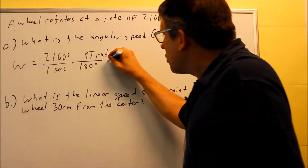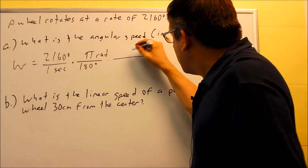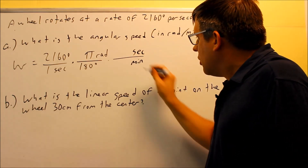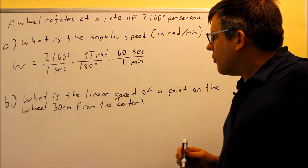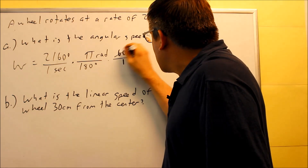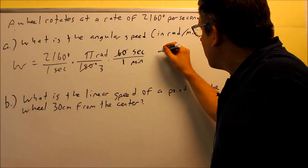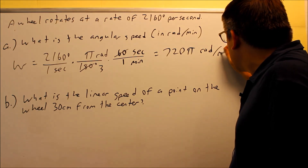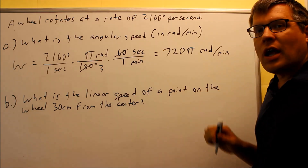To also change seconds into minutes, we write the conversion factor with seconds on top and minutes on the bottom: one minute equals 60 seconds. Multiplying across, the 60 divides into 2160, giving 36 — wait, 2160 divided by 3 (after canceling the 60 with 180) gives 720. So the result is 720 pi radians per minute as the angular speed.